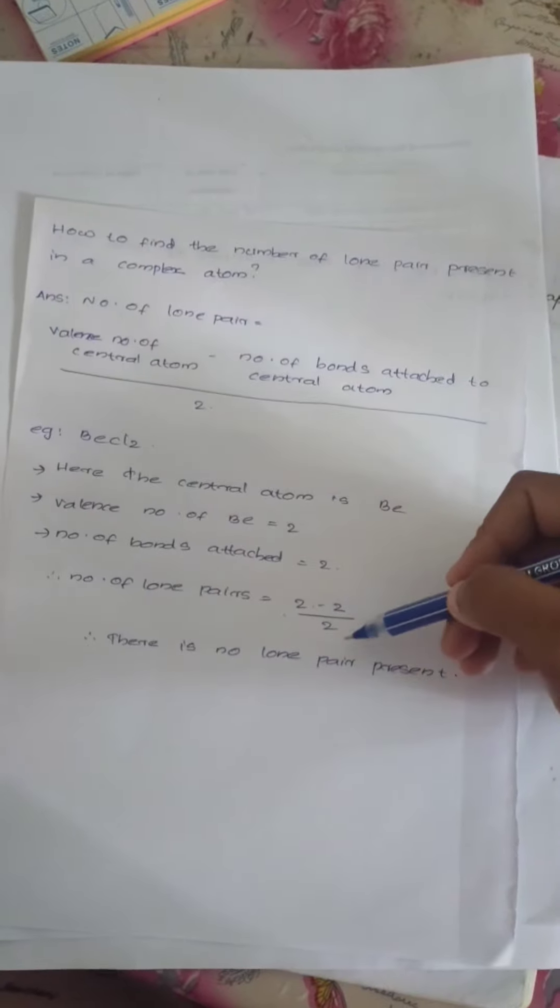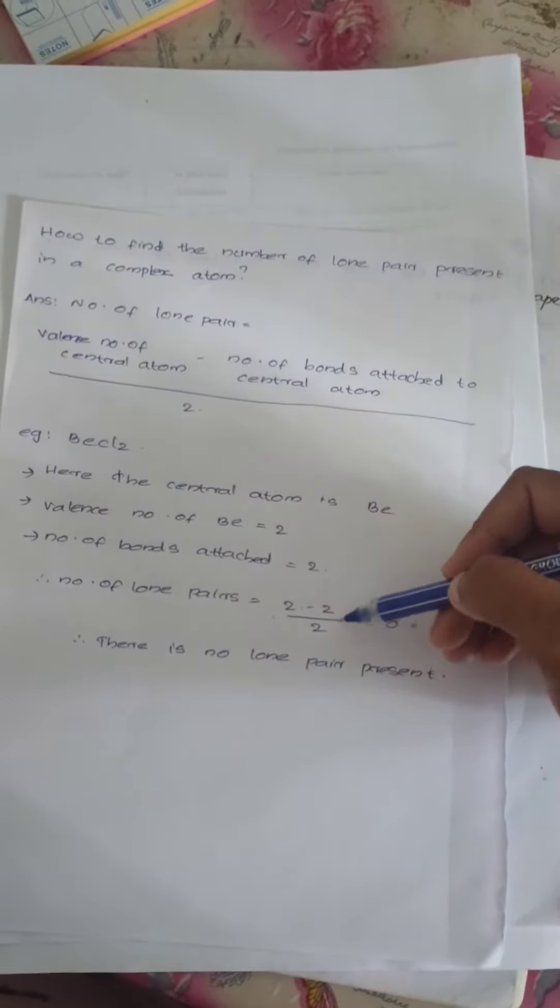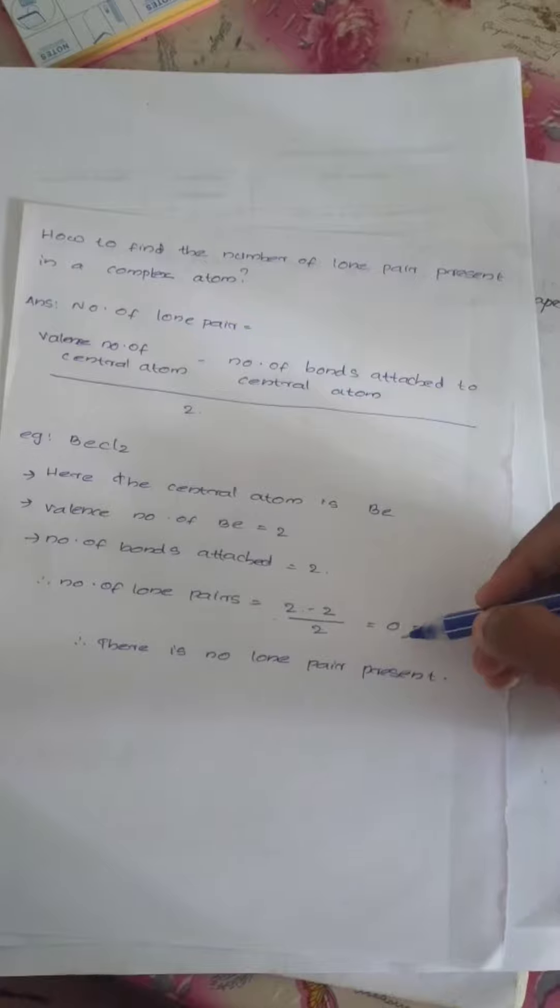Here it is 2, all divided by 2. 2 minus 2 equals 0. 0 divided by 2 equals 0.